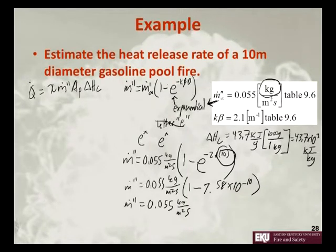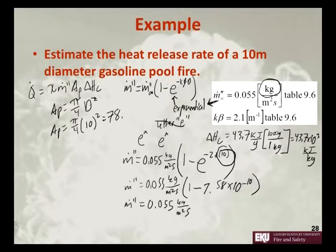We need to know the area. The area of the pool is equal to pi over 4 times diameter squared. So that's pi over 4 times 10 squared, which equals 78.5 meters squared.